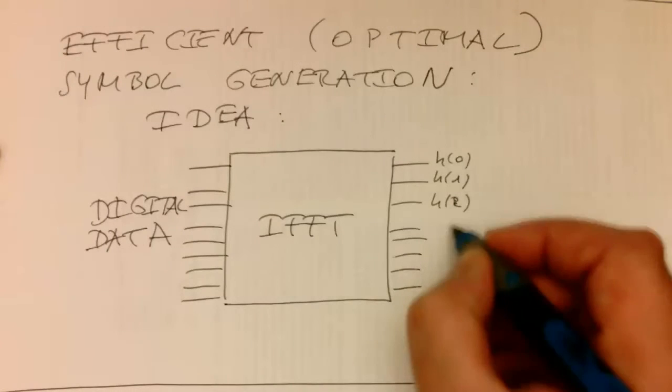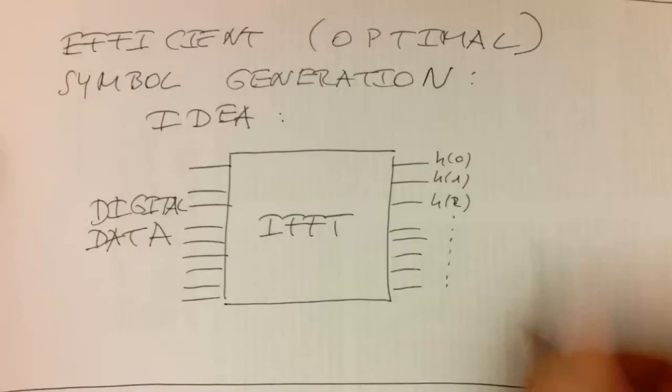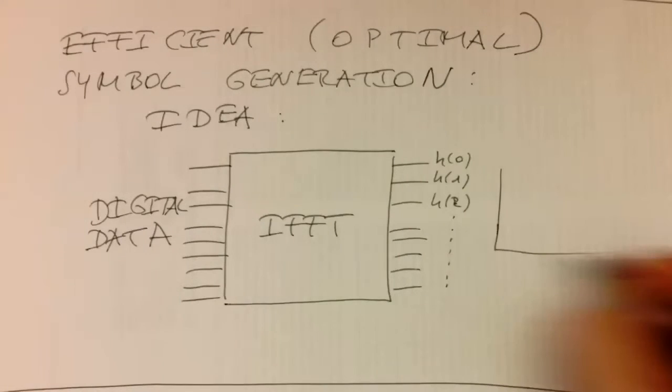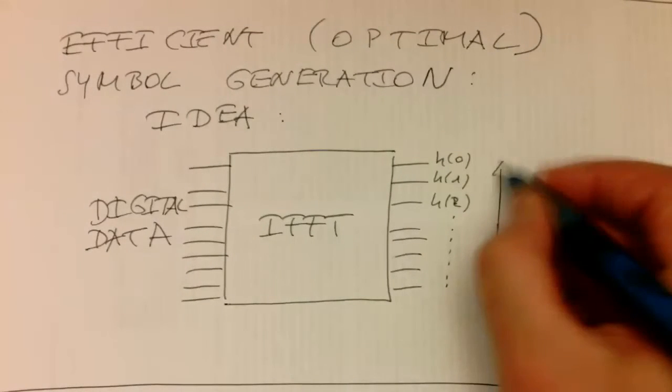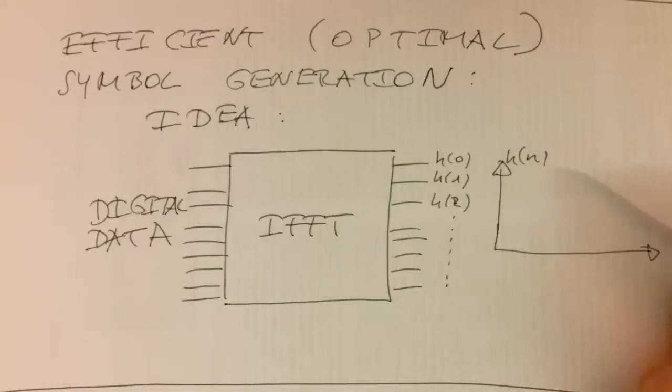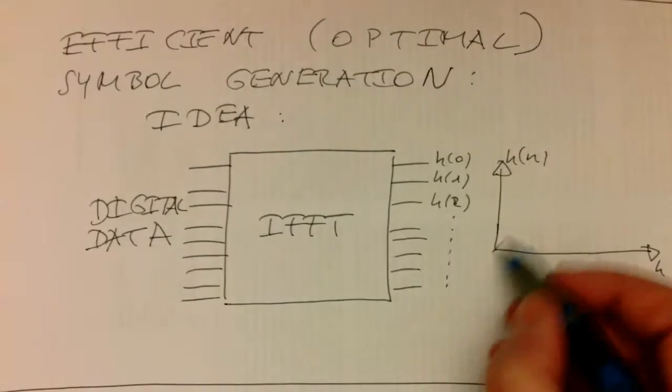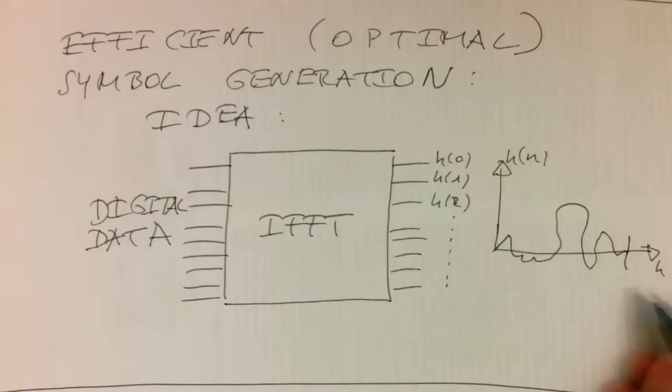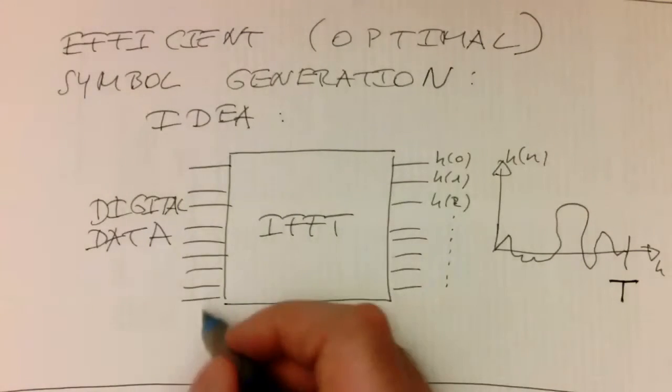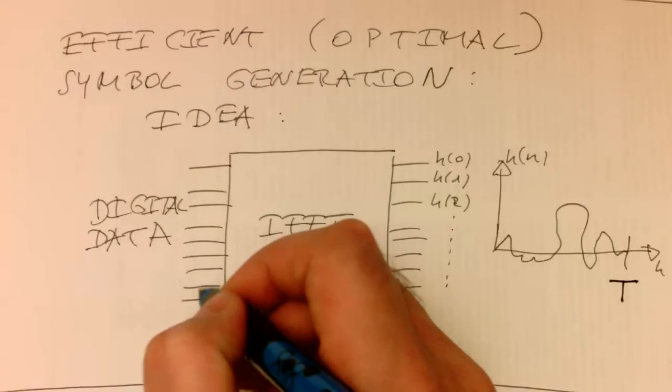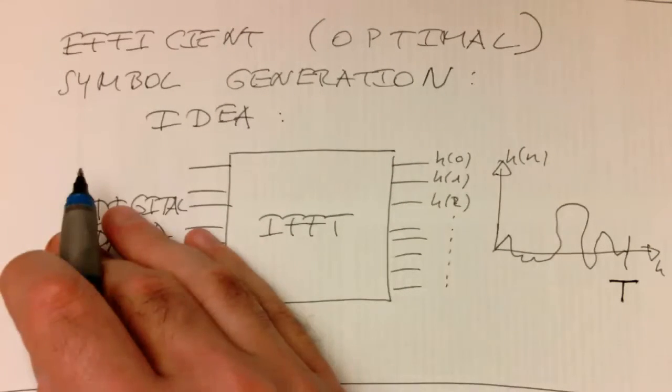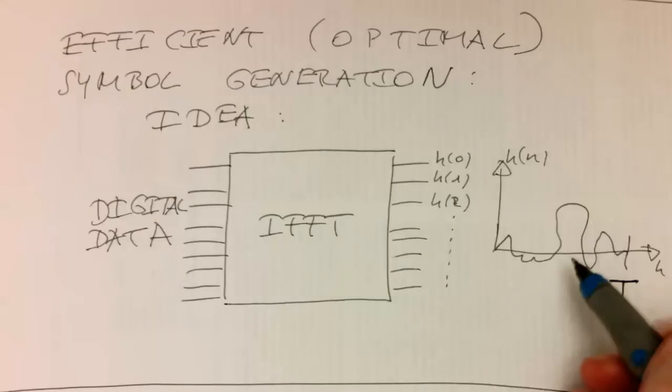And then at the output here we are getting something like h of 0, h of 1, h of 2, and so on. This is obviously a time series here, and then this gives us some funny shaped output which lasts t. Therefore, if these samples have the duration t and we are chunking our digital data up in the way that this can be fed into the Fourier transform and sent out here, we are getting symbols out.